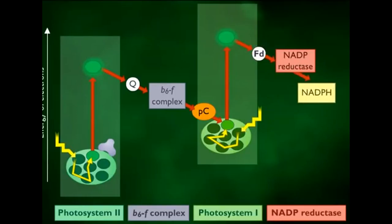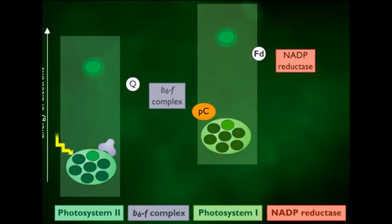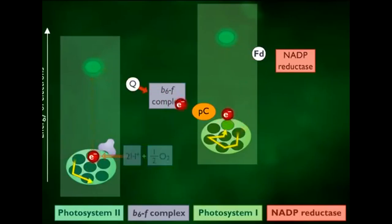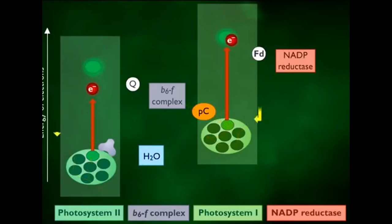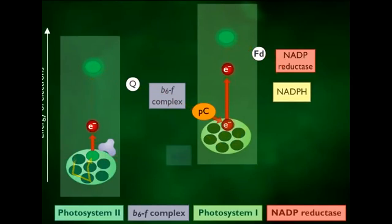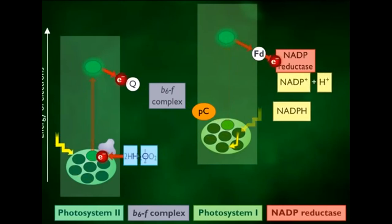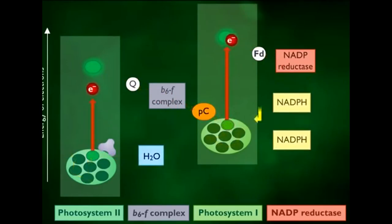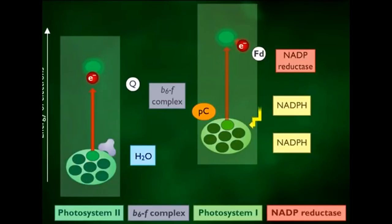Since the excited electron does not return to photosystem II, this mechanism for making ATP is called non-cyclic photophosphorylation. When photosystem I absorbs a photon of light, it ejects a high-energy electron. The energy from this light absorption is used to generate reducing power in the form of NADPH. The ejected electron is replaced by an electron from photosystem II.